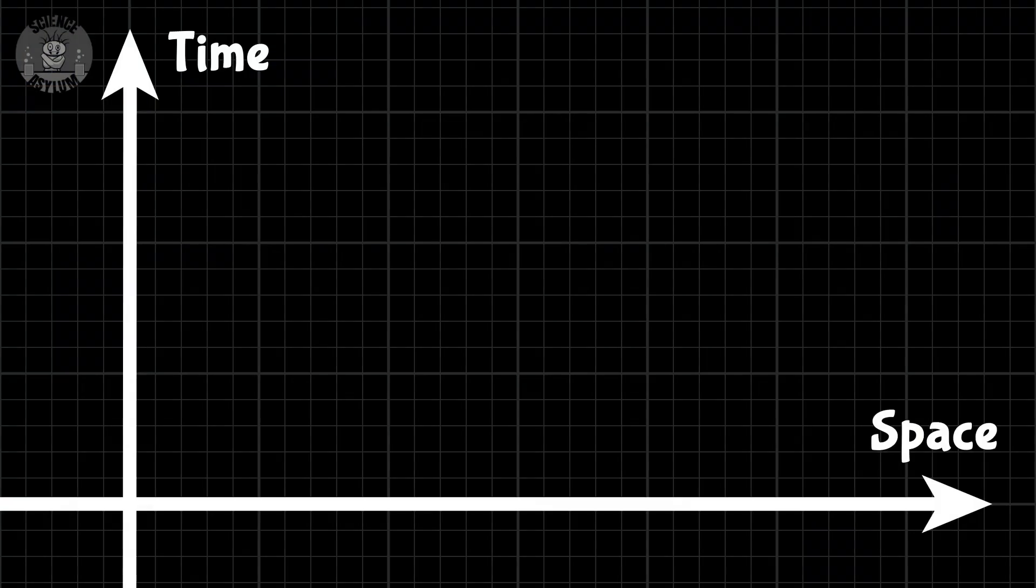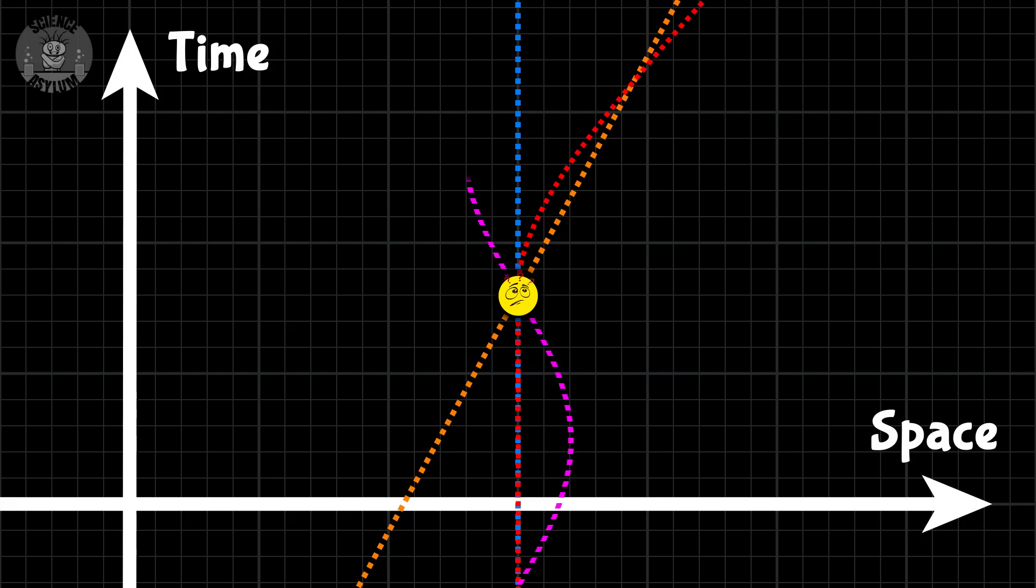Let's see what this looks like on a space-time diagram. You are here. This event represents your present, your now. Whether you're stationary, moving at a steady speed, constantly accelerating, or doing something completely random, you can't go any faster than light.